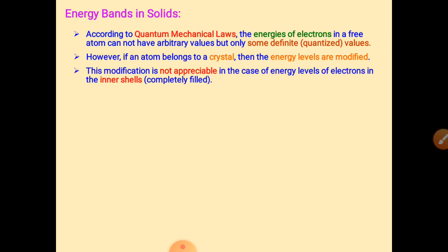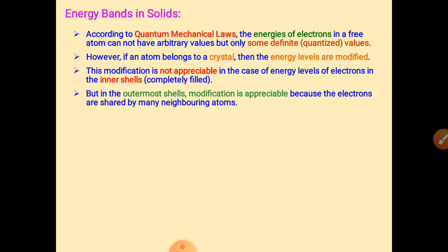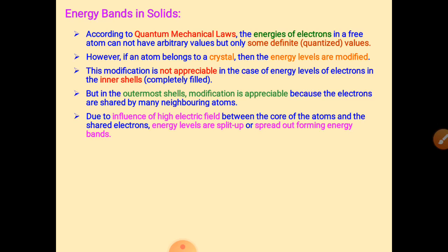This modification is not appreciable in the case of energy levels of electrons in the inner shells, because inner shells are always completely filled and are not free electrons. The outermost shell modification is appreciable because free electrons from the outermost shell interact with other atoms. Due to the influence of the high electric field between the core of atoms and the shared electrons, energy levels are split up or spread out, forming energy bands.